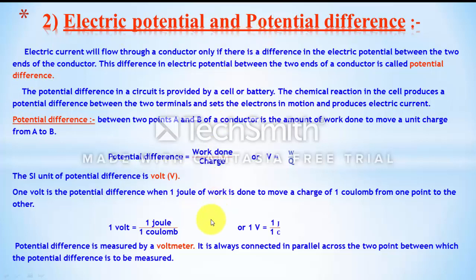Electric potential and potential difference: The potential difference is measured between the two ends of a circuit element when current is passing. When current is not flowing, the potential difference is zero. In open circuit, there is no potential difference across any circuit element. Potential difference between two points is the amount of work done to bring a unit positive charge from one point to another. Its unit is one volt, which equals one joule per one coulomb.